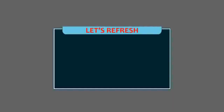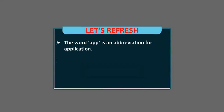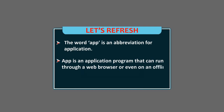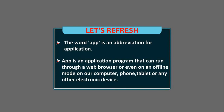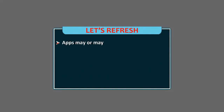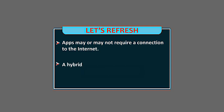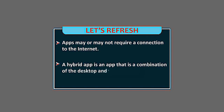Let's refresh. The word app is an abbreviation for application. An app is an application program that can run through a web browser or even in offline mode on our computer, phone, tablet or any other electronic device. Apps may or may not require a connection to the internet. A hybrid app is an app that is a combination of the desktop and the web app.